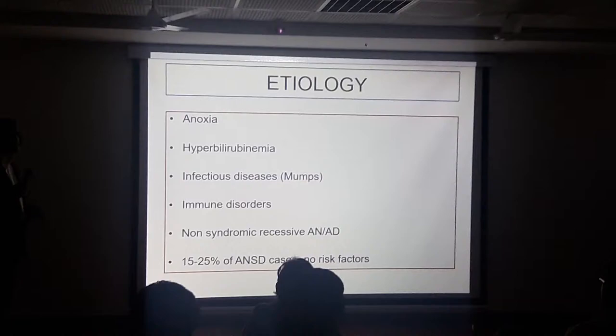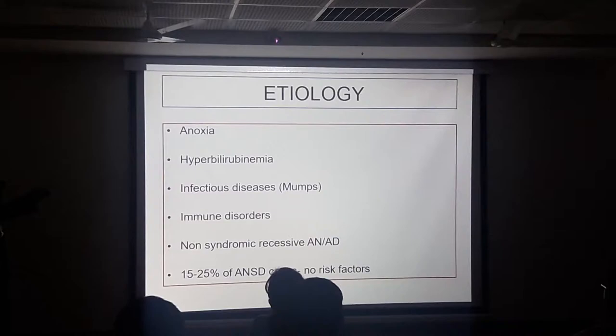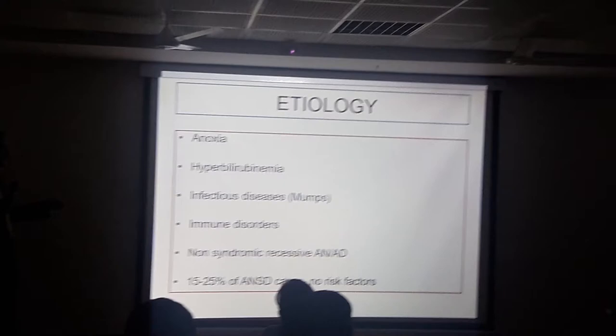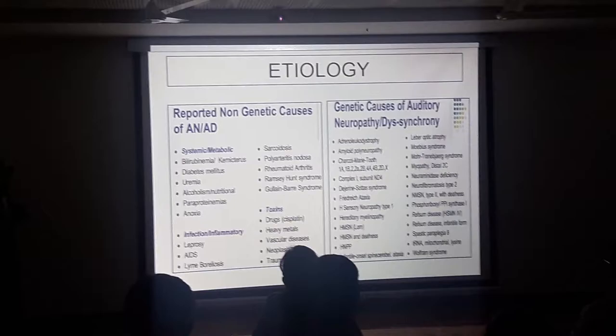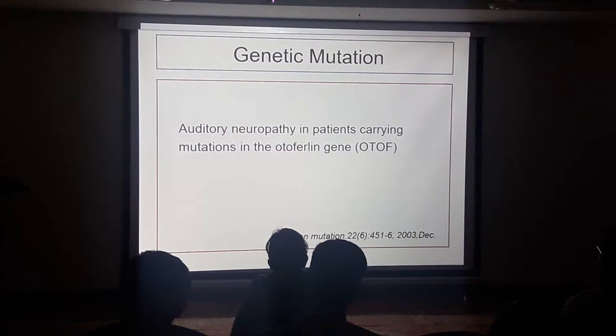Etiology includes anoxia, hyperbilirubinemia, birth trauma, infectious diseases, and immune disorders. About 15 to 25% of cases find no risk factors at all. There are many risk factors that can be genetic as well as non-genetic which can cause auditory neuropathy. Some studies have also found that mutations of certain genes can lead to deterioration.